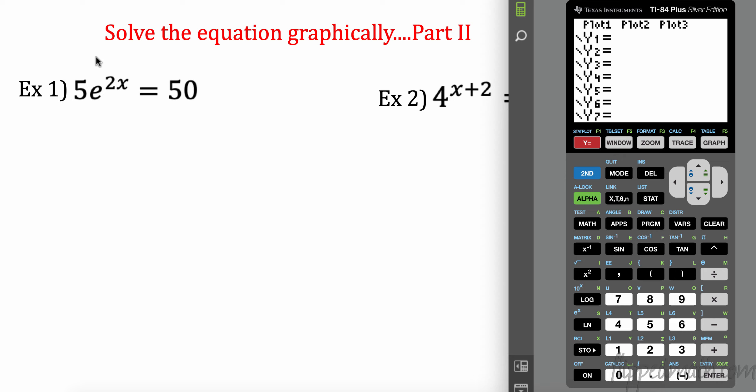Let's do example one here. So I have to go to y equals. And remember, one side of it is going to go into y1. So I'm going to do 5e. E is down here on the natural log. I have to hit second to get to that. And then it's to the 2x. And then I'm going to do y2. And that is 50. So I'm going to hit in 50 here. And then let's graph. Let's see where they cross. Remember, it's all about where they cross. I don't see where they cross.